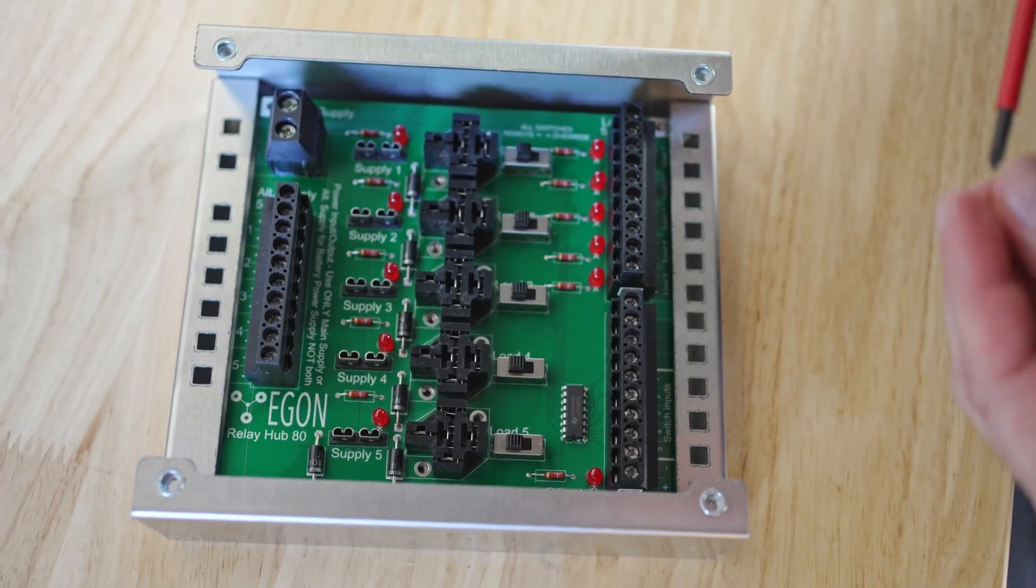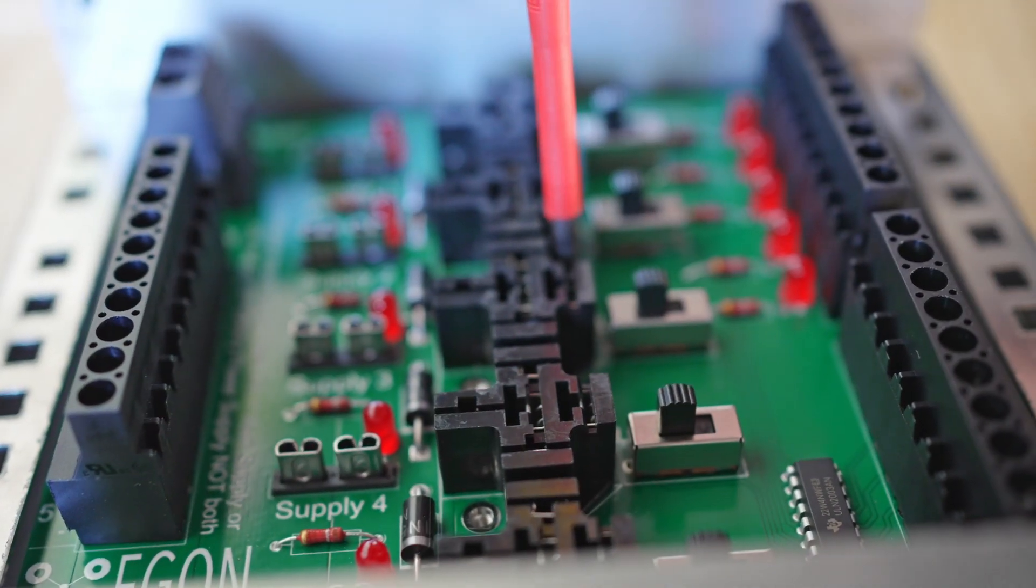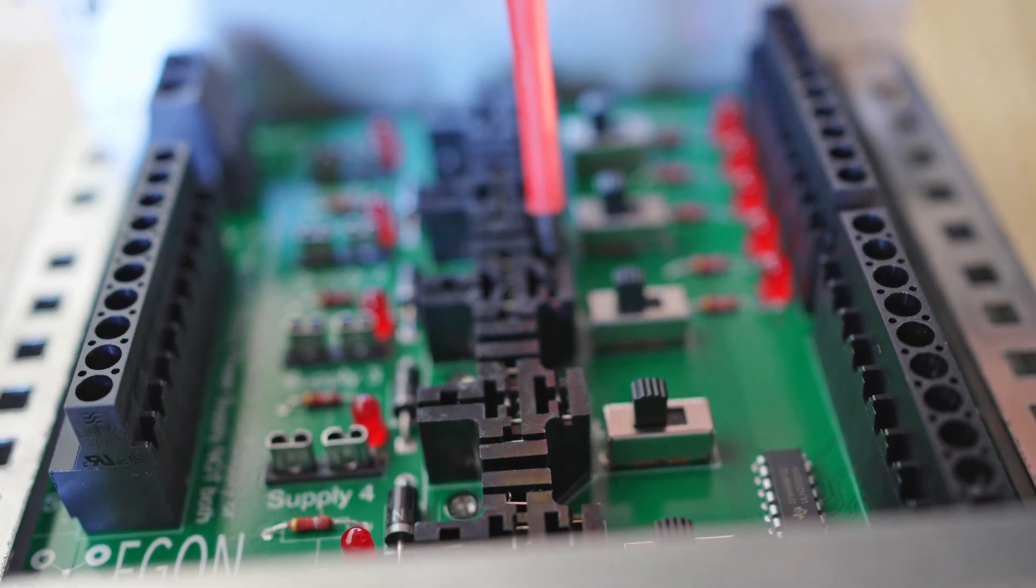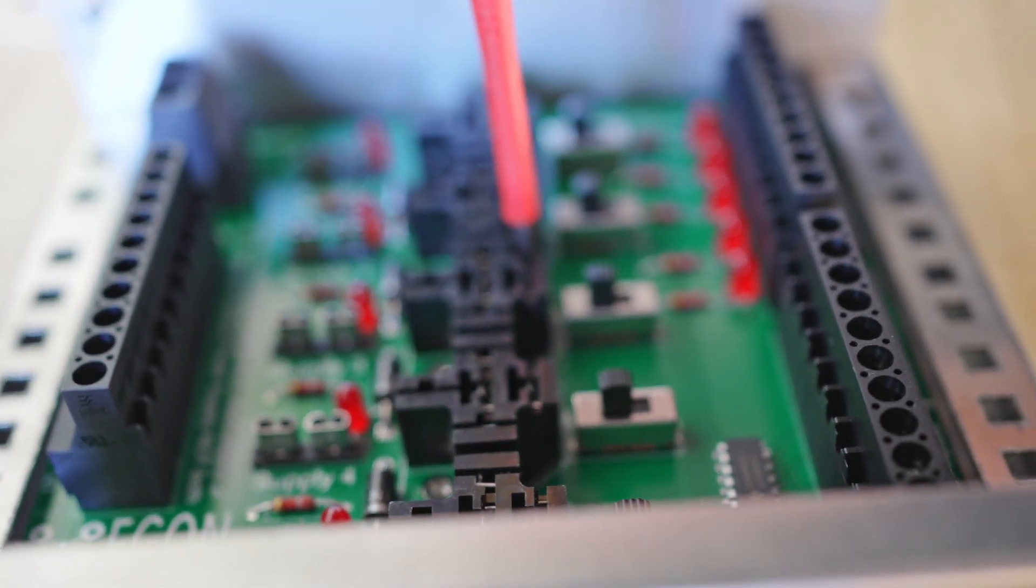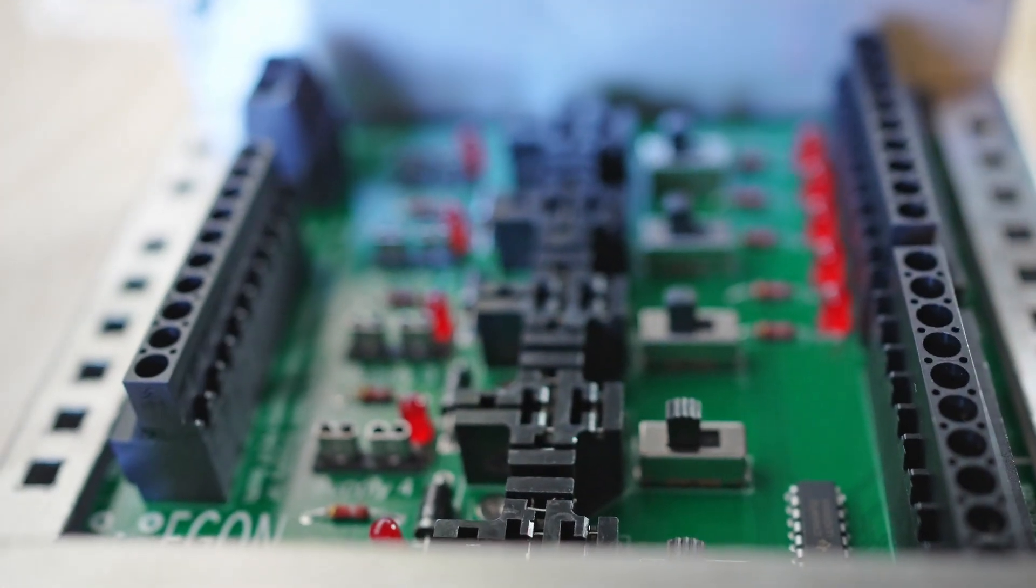From here on you can now put all the screws into the circuit board. Make sure you do not tighten the screws straight away. Just put them in and leave them loose so the board can still move a little bit. Once all the screws are in you can then go around and tighten them all.